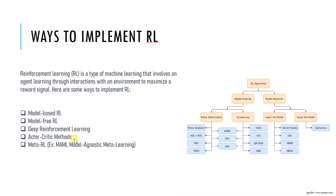A3C is an actor-critic method that uses multiple parallel agents to learn faster. This approach combines both value-based and policy-based methods, where the actor learns the policy and the critic learns the value function. Different types of actor-critic methods include Advantage Actor-Critic, also called A2C; Asynchronous Advantage Actor-Critic, also called A3C; and Proximal Policy Optimization, also known as PPO.